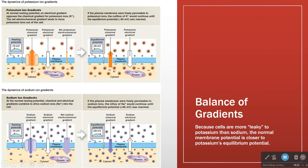If we replaced the channel system with a membrane that was simply freely permeable to potassium, then we would get our minus 90. So the minus 70 comes from the limitation of the number of channels we have.